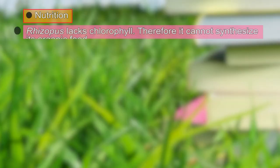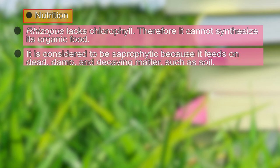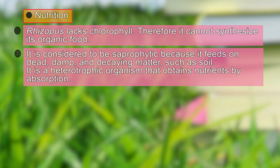Coming on to the nutrition of Rhizopus — it does not bear chlorophyll, meaning it is a heterotroph and cannot synthesize its own food. It is considered a saprophytic organism because it feeds on dead decaying matter such as soil or any decaying matter of plant and animal origin.